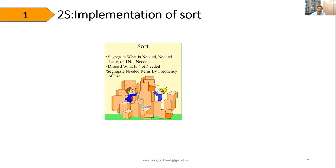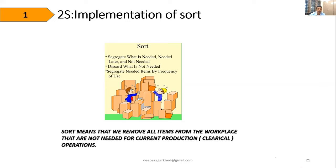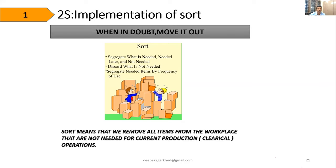Items can be sorted by frequency of need — daily, weekly, or monthly — and those not needed can be placed in a red bin for discarding. Sort means removing all items from the workplace that are not needed for current production or operation. The tagline is: when in doubt, move it out.